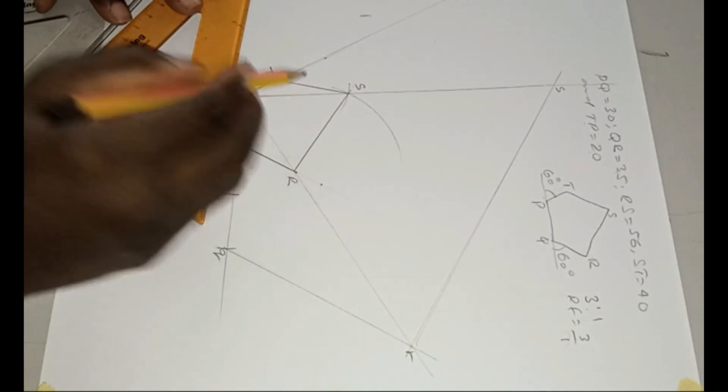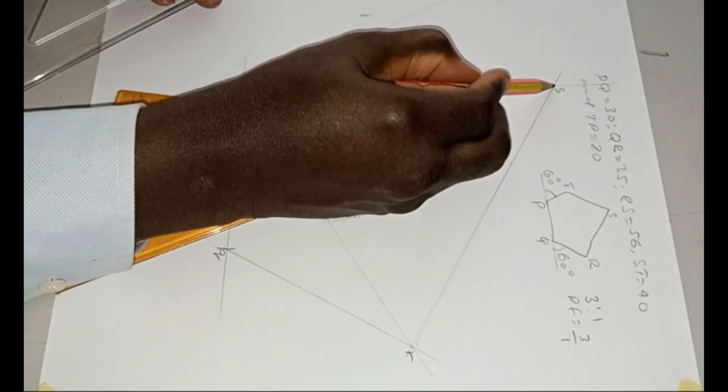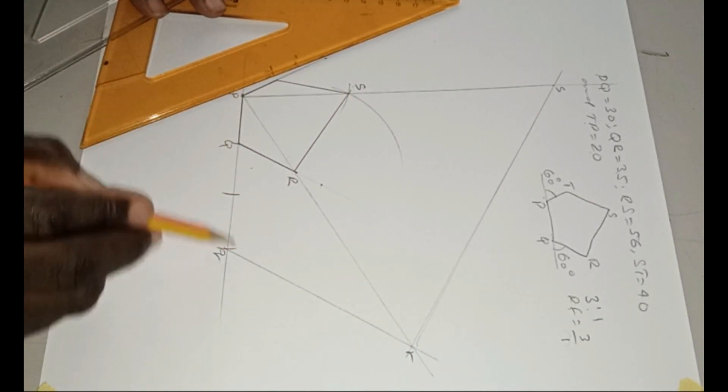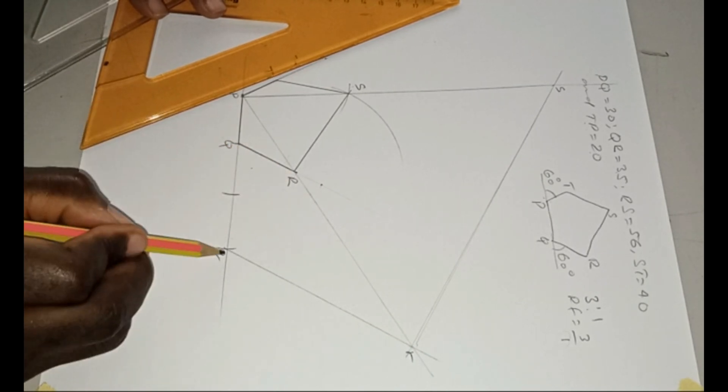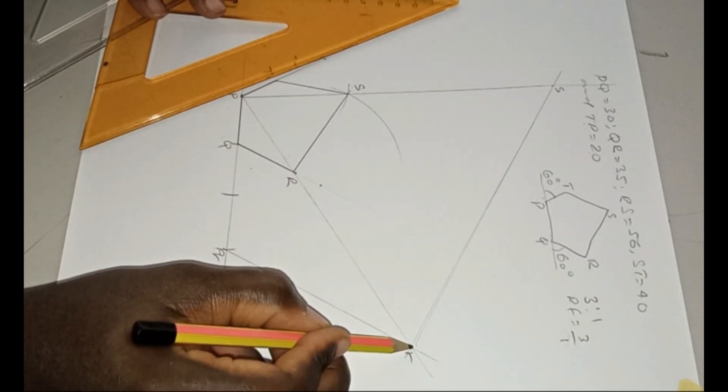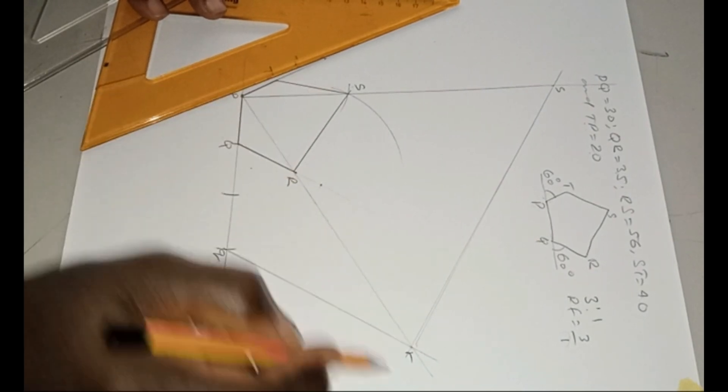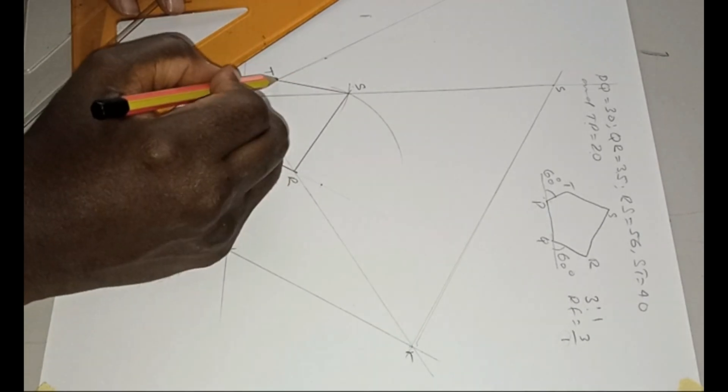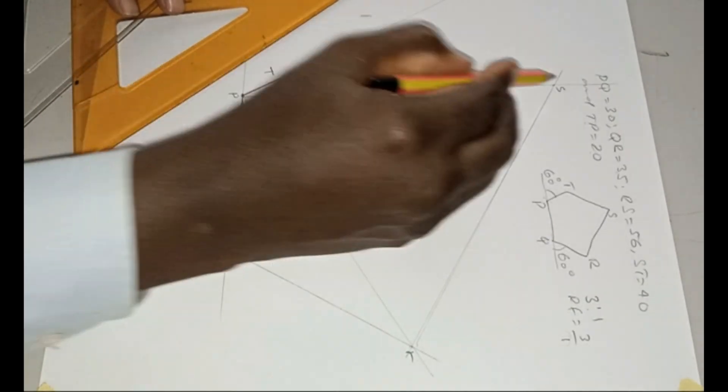Now we need our ST from S. You know we did our Q, this RQ from Q. We took it here. When it intersected R, we now continue the SR from R. So this time around we want to continue S. We want to draw ST from S.